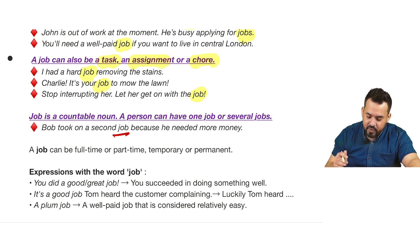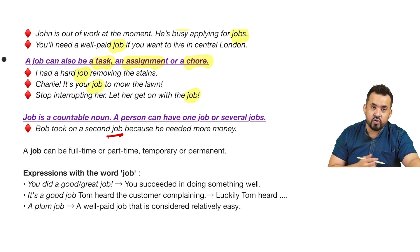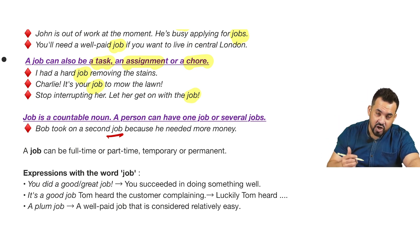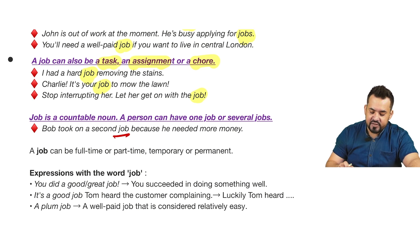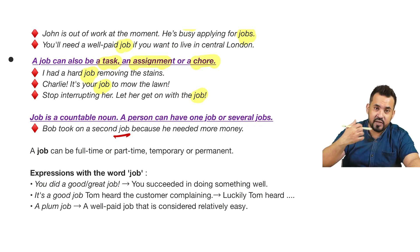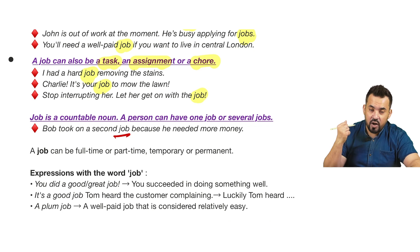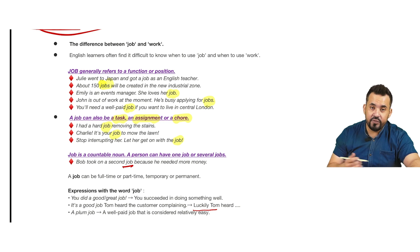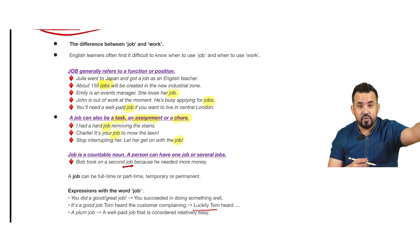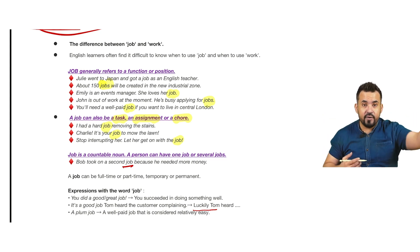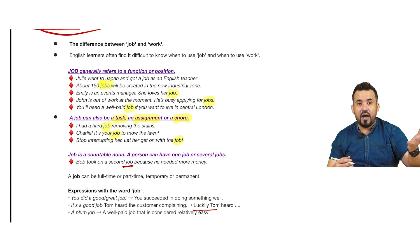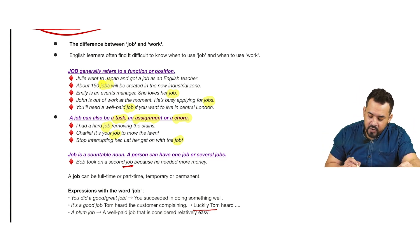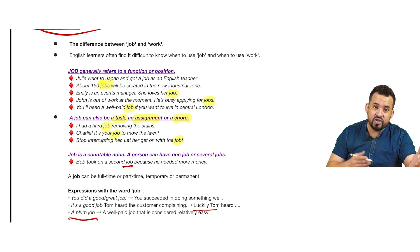Expressions with 'job': 'You did a good job' or 'great job' — this is encouragement, telling someone you approve of what they've done. 'It's a good job Tom heard the customer complaining' — here it means 'luckily,' as in luckily Tom found this problem before it got bigger. 'A plum job' means a well-paid, desirable job with a big salary.